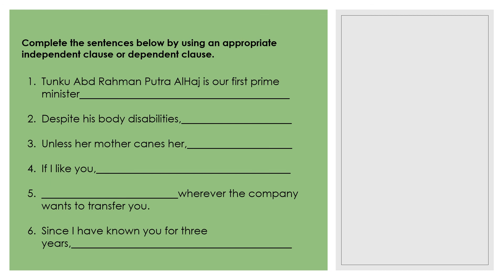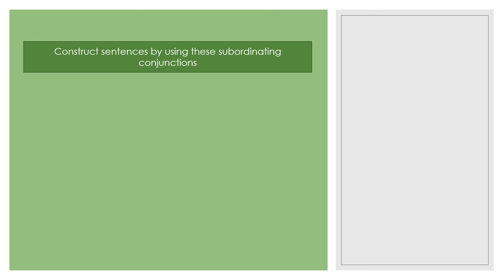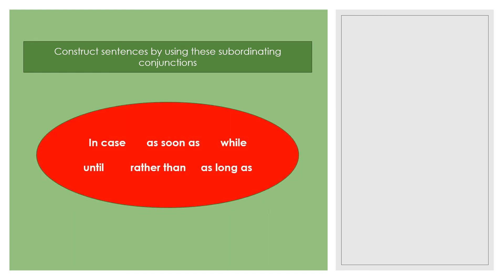You can try the remaining exercises first before we discuss them during the live class next week. We will also construct sentences using three more subordinating conjunctions: 'in case', 'as soon as', 'while', 'until', 'rather than', and 'as long as.' You can do some research, but don't use Google Translate — understand what the conjunctions mean and try to combine dependent and independent clauses using them, either in the middle or at the beginning of a sentence. Assalamualaikum warahmatullahi wabarakatuh.